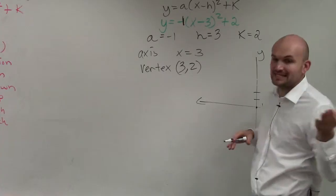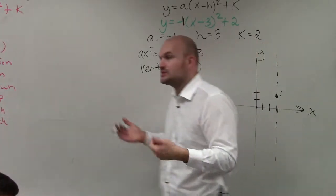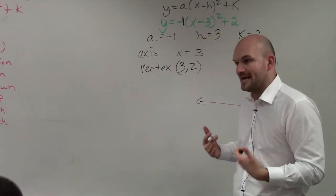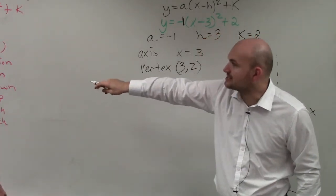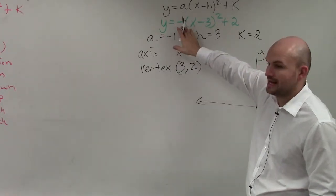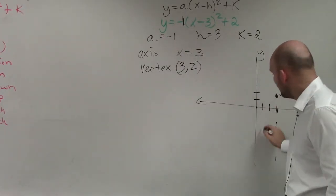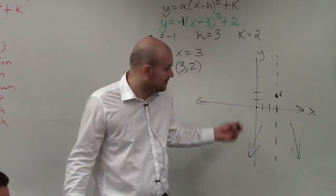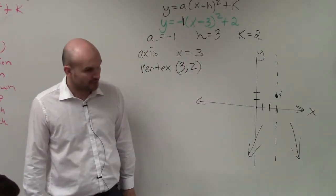Now, the next thing we need to do is identify does the graph open up, or does the graph open down? And that actually is all based off the value of a. So again, we say that when a is less than 0, the graph is going to open down. I look here, my a is equal to negative 2. So therefore, I know, or negative 1, I know my graph is going to open down. I don't know the shape of the graph, but I know it's going to be opening down.